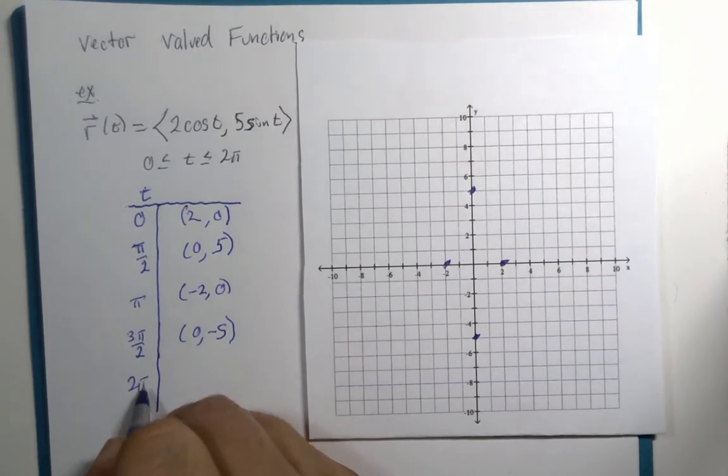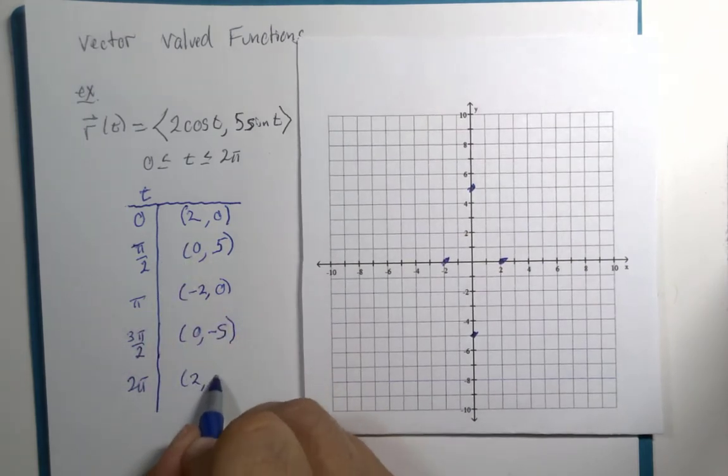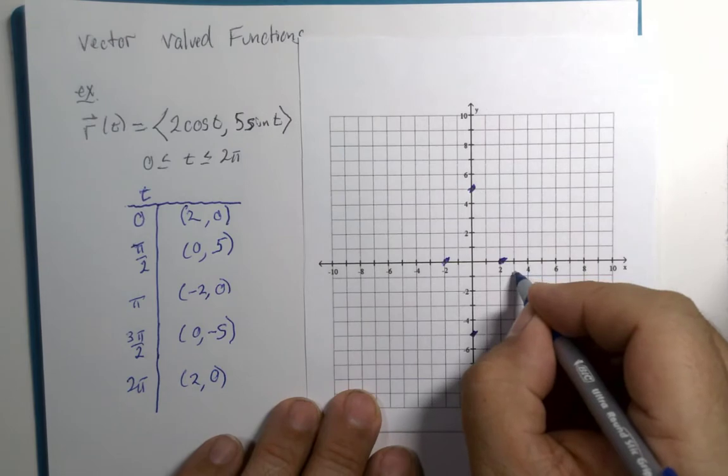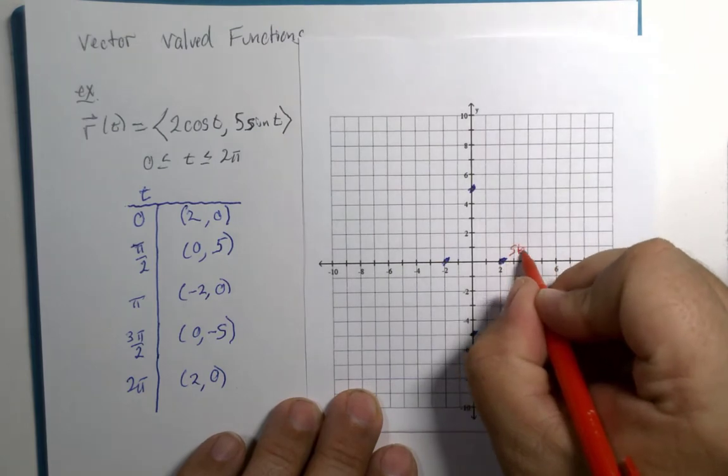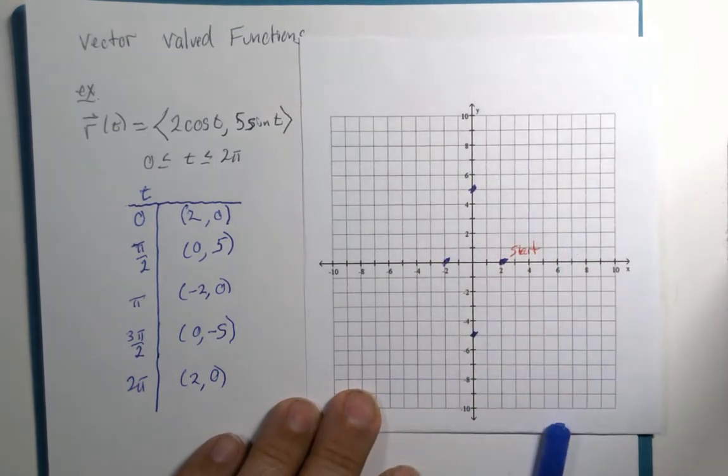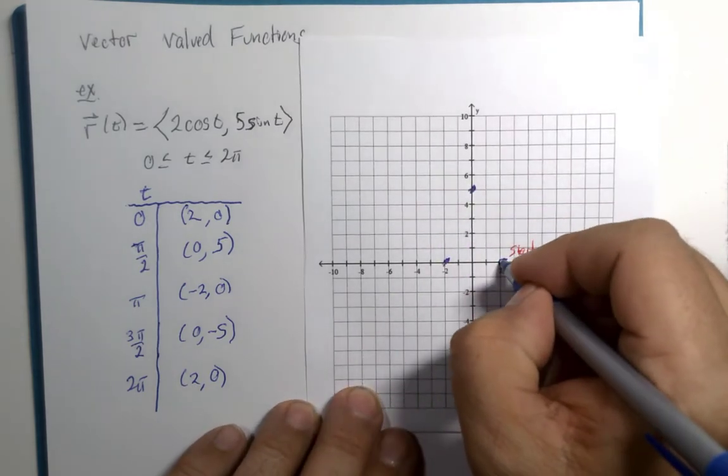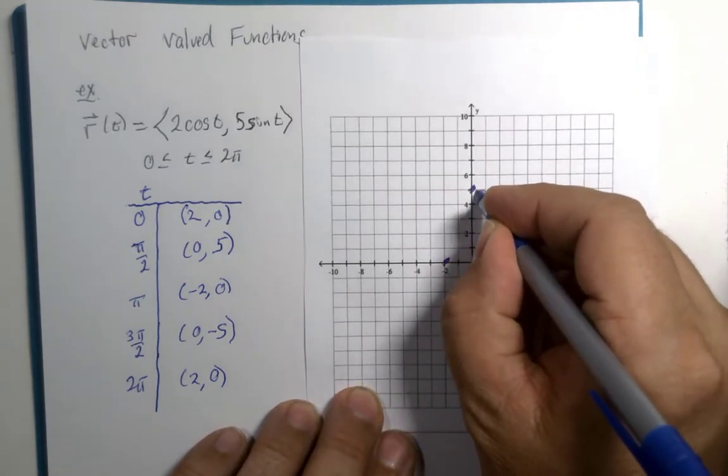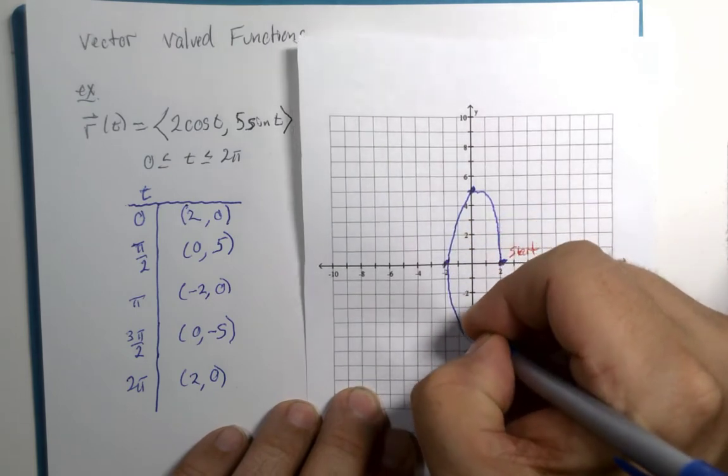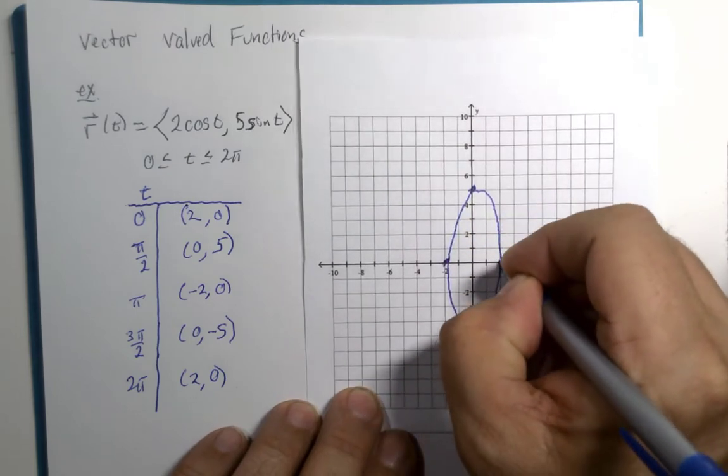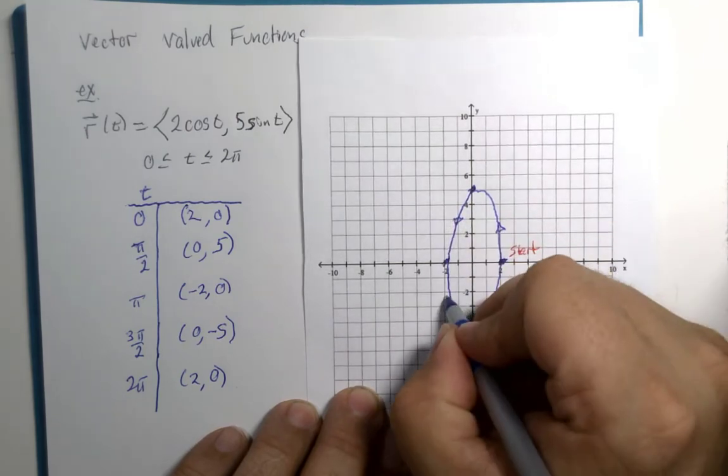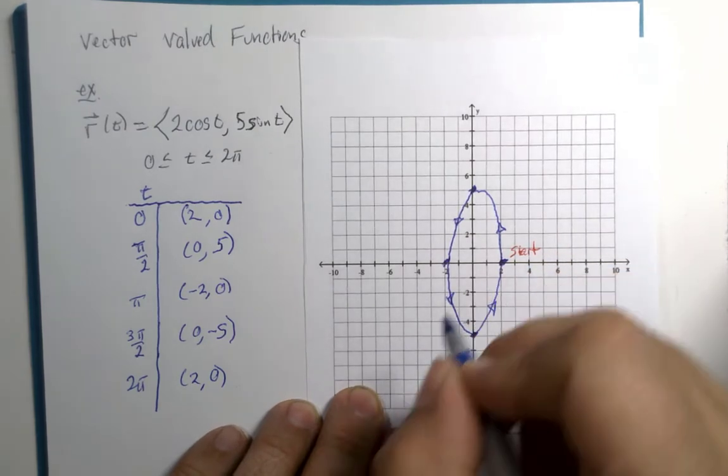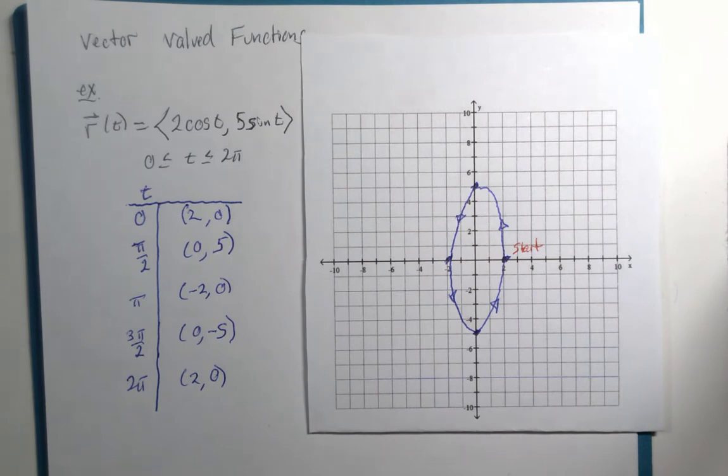And 2 pi, cosine of 2 pi is, oh, that's going to be the same as the first point, 2, 0. So, we start here and we end here. So, what I'm going to do is show you that this is an ellipse. Not just because I'm going to connect the dots and it almost looks like an ellipse. And we can see that it goes this direction. I don't need to have four arrows showing the direction. I just need at least one that shows the clear direction of this elliptical path.